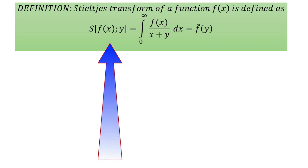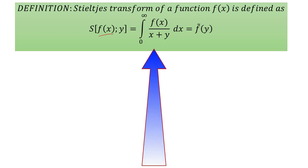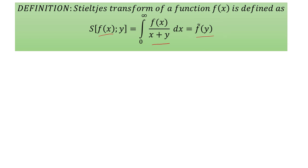First of all we define the Stieltjes transform. Suppose f(x) is some function, then its Stieltjes transform is denoted by S{f(x); y} and equals the integral from 0 to infinity of f(x)/(x+y) dx. Here y is a constant, so the output is some function of y, generally denoted by f̃(y).